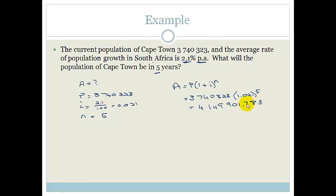So the population is going to be 4,149,901.783. Now, you need to think about this grade 10s because you have to be logical here. Can we have a 0.783 of a person? Well, we can if we think about pregnant women. But let's pretend that's not happening. So therefore, we are going to round that up. So it becomes 4,149,902 people. So that is going to be the estimate population of Cape Town in 5 years if they have the average rate of population growth.